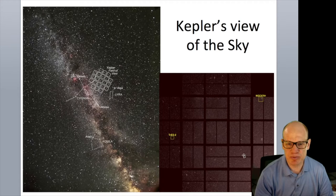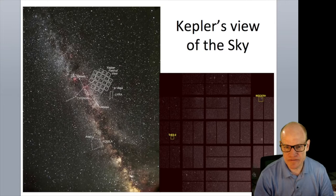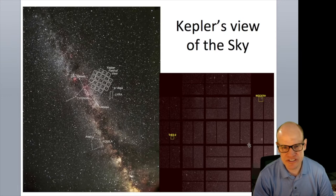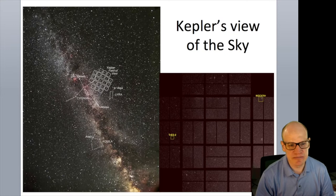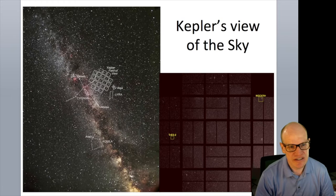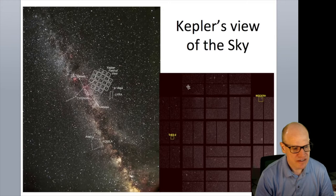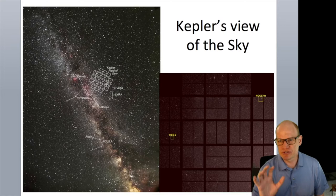The Kepler field of view is brighter toward the galactic plane and dimmer away from it. In the sky, it's positioned above the galactic disk — visible in summer near the Summer Triangle stars Deneb, Vega, and Altair. The field is roughly 10 degrees on a side, about the size of your palm held at arm's length.